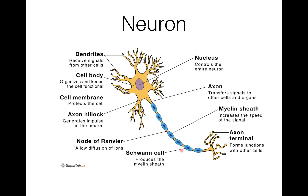The Schwann cells produce the myelin sheath. The axon forms junctions with other cells, helping in forming junctions with other neurons or other cells. In a neuron there may be up to 200 dendrites, and these are like short projections. The neuron or nerve cell has processes including dendrites, axon, myelin sheath, and axon terminal.